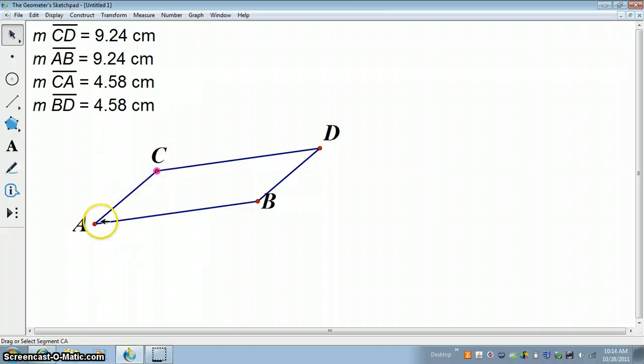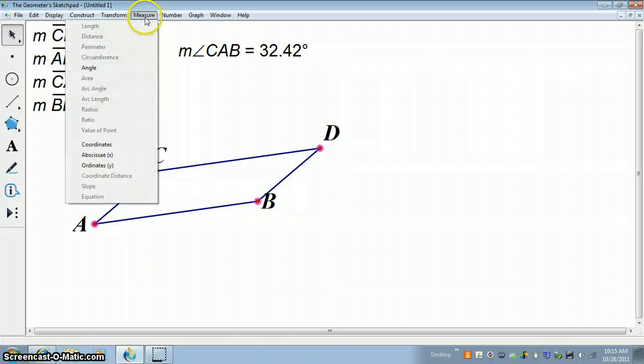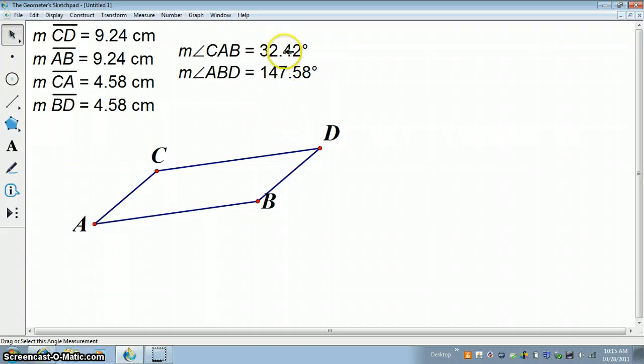What about the angles in a parallelogram? So let's measure angle A. So here's angle A. And let's measure angle B. So there's angle B. Notice the sum of these two angles here is actually 180 degrees, and that should make sense, since angle A and angle B are same side interior angles between two parallel lines. And we know, back from chapter 3, that same side interior angles are supplementary.